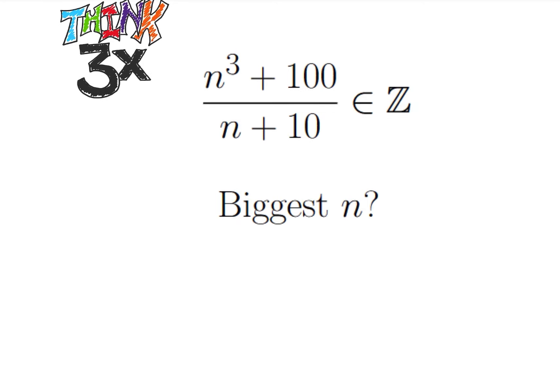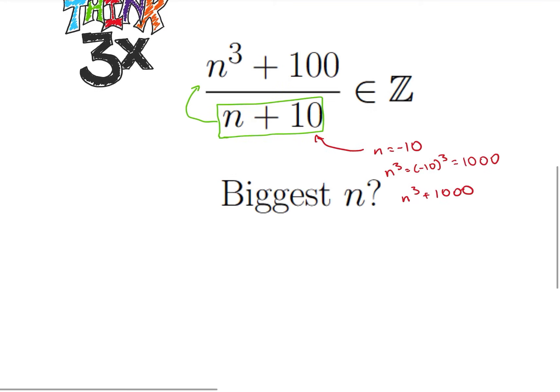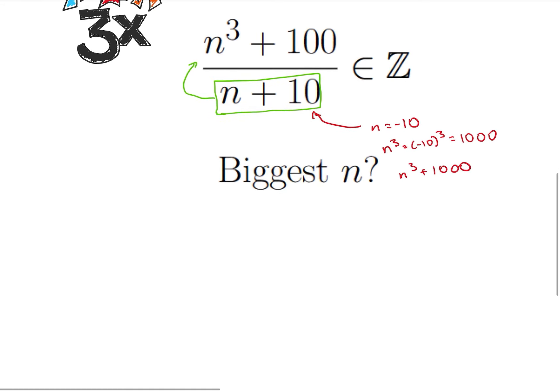But what we can do is we can figure out what we can plug n plus 10 directly into and see if we can deal with a remainder. So when can that go into n cubed? Let's think about this for a second. So my root on the bottom is going to be n equals negative 10. So what is that the root of on the top? If I plug in n cubed, that's negative 10 cubed is equal to negative 1000. So if I have n cubed plus 1000 on top, that would be divisible by n plus 10.